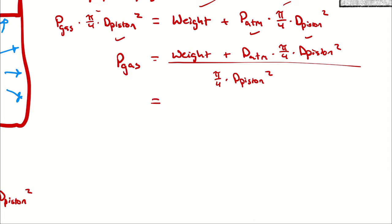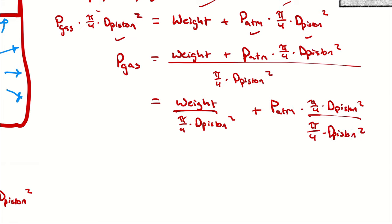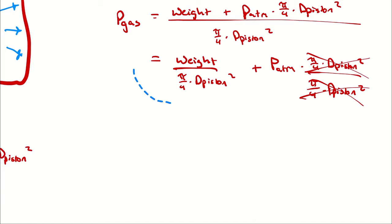So that simplifies down to weight over pi over 4 times diameter of the piston squared plus p atmosphere, note that that's a p not a d, times pi over 4 times the piston squared over pi over 4 times the piston squared. And pi over 4 times the piston squared cancels in the right term, which means that we're just left with this, and the reason I'm pointing that out is because we are calculating an absolute pressure.